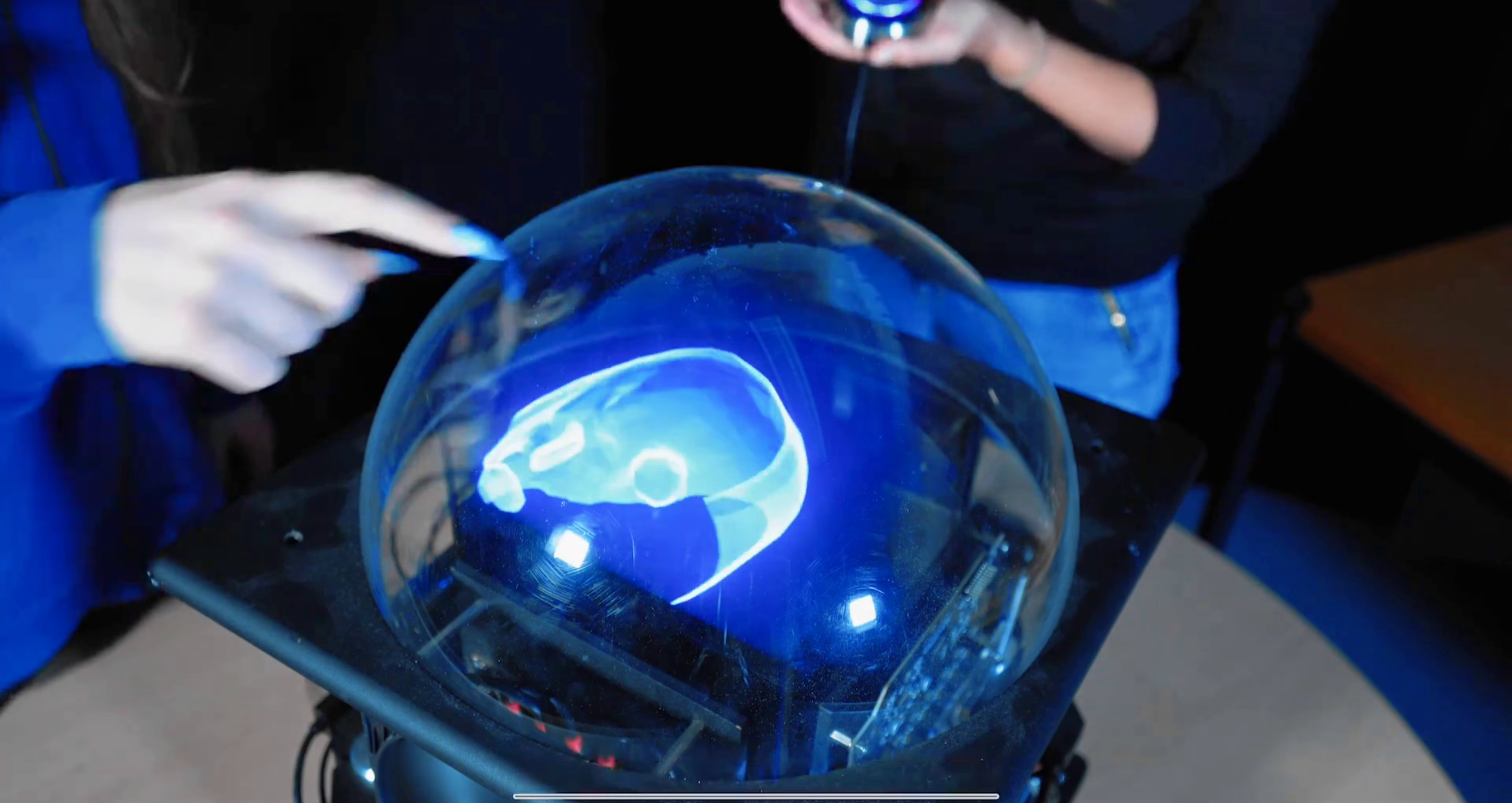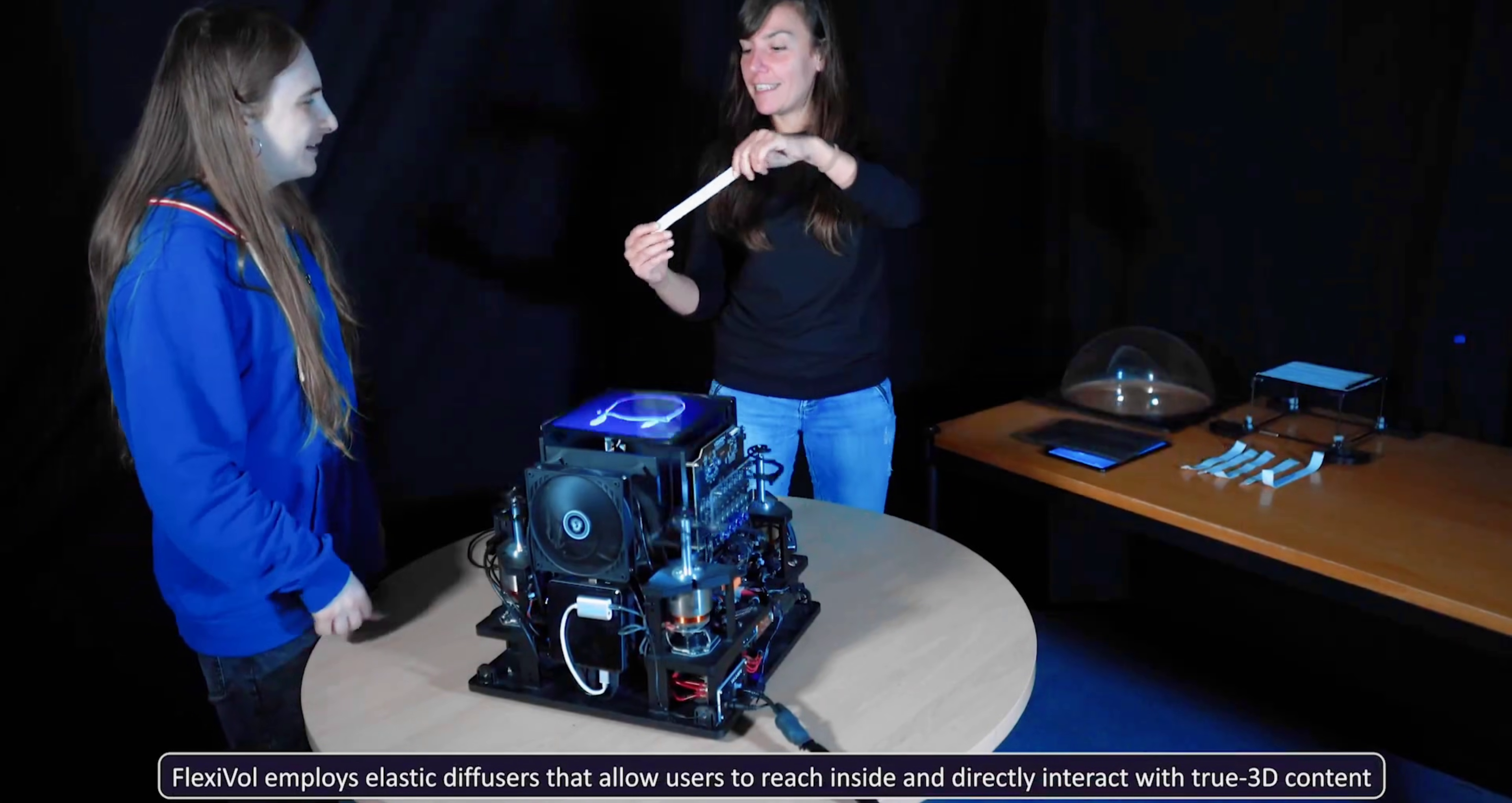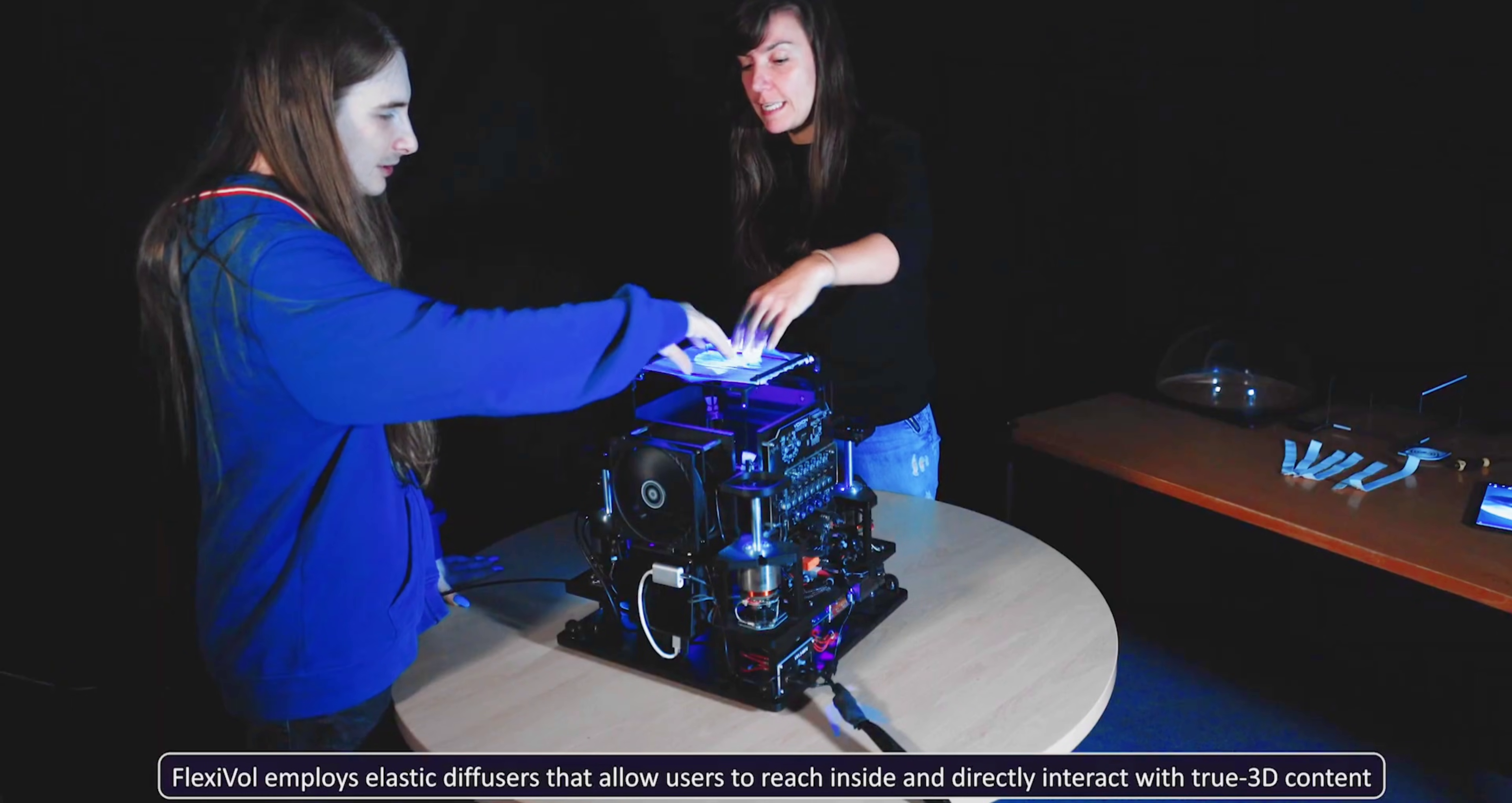Conventional systems use a rigid diffuser that prevents physical interaction. FlexEvol replaces this component with a set of elastic strips, allowing users to insert their hands into the display volume and interact with rendered objects.